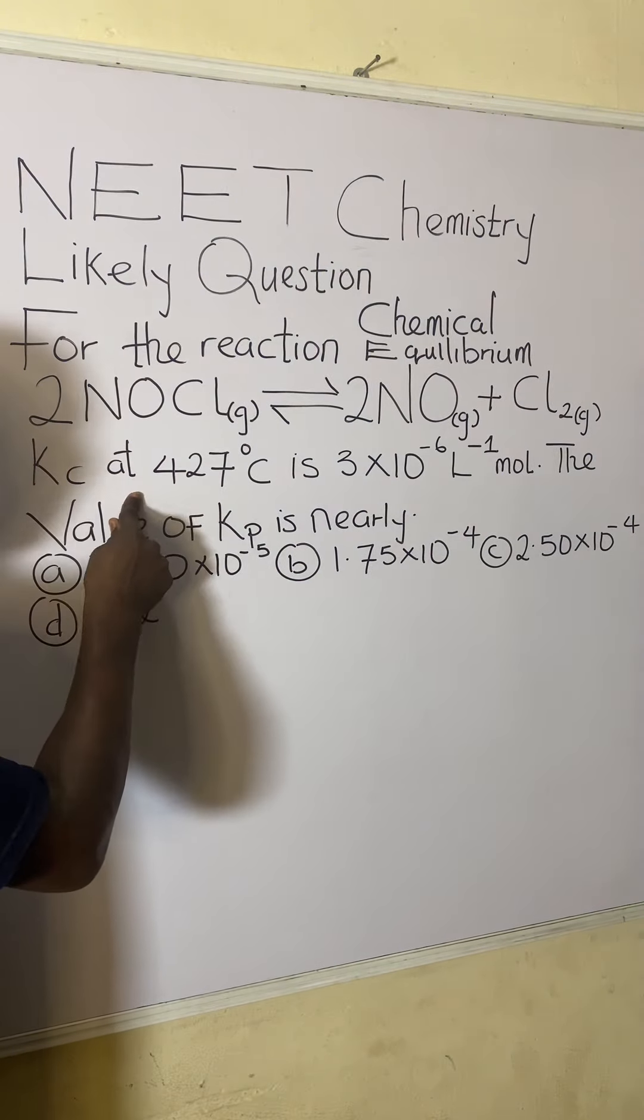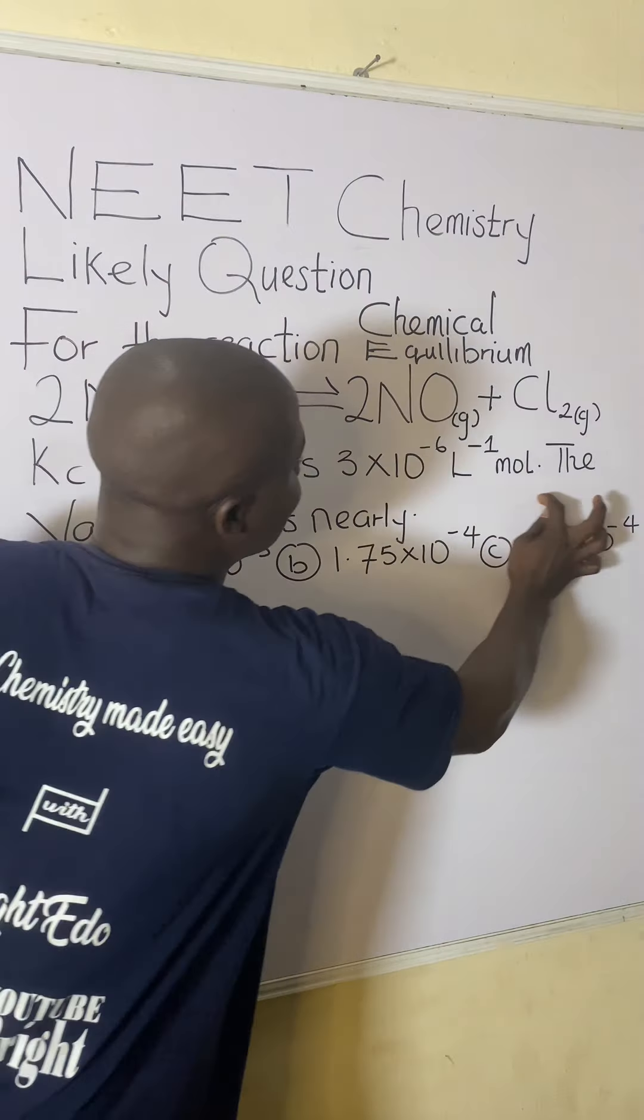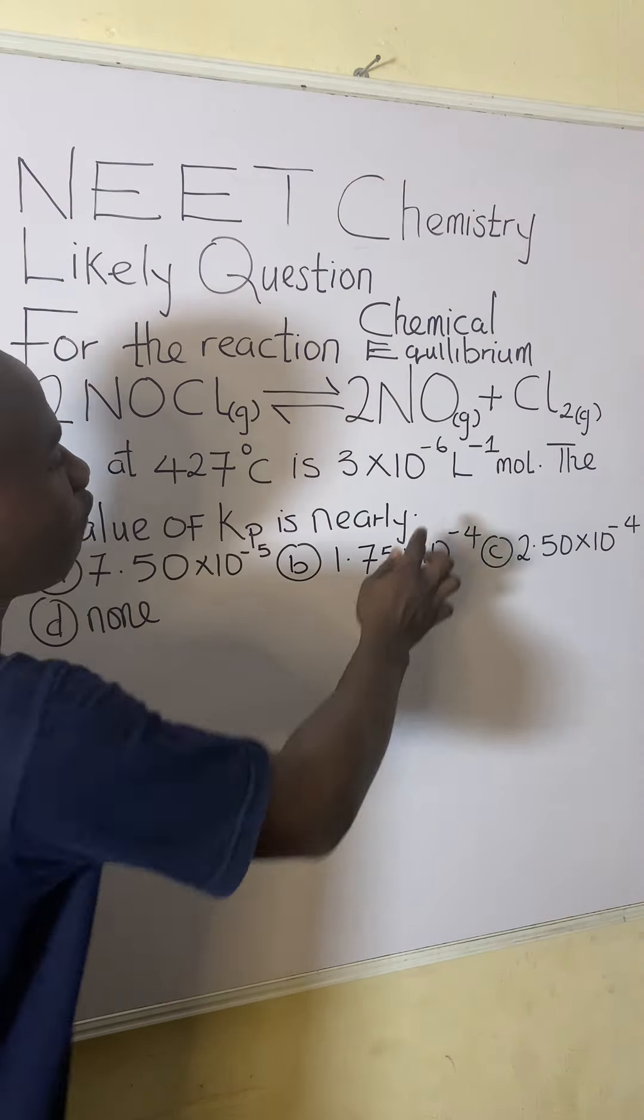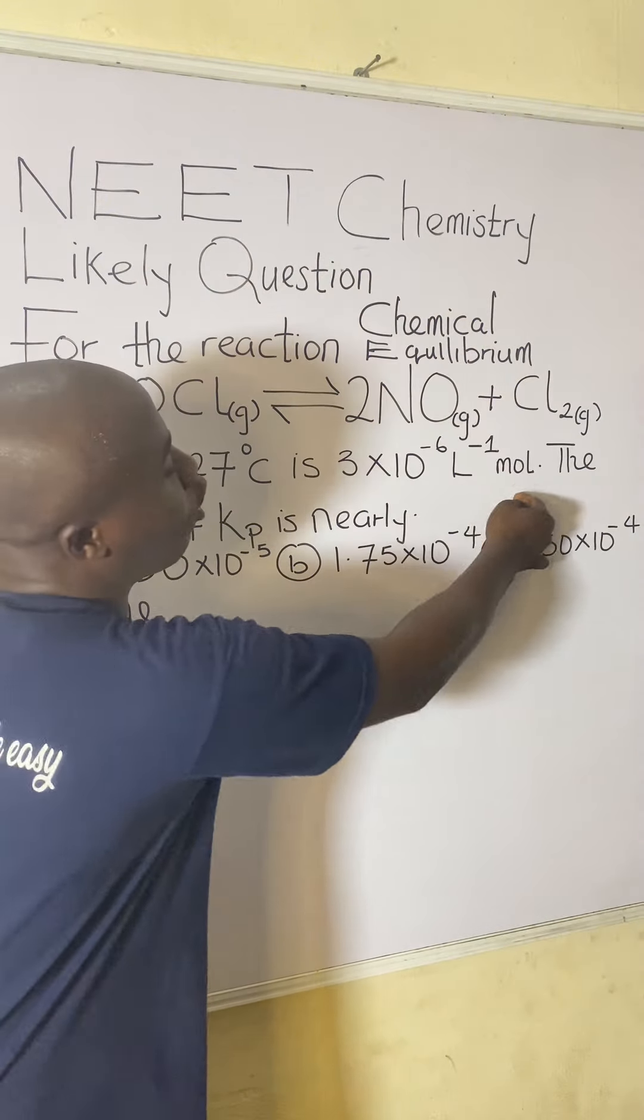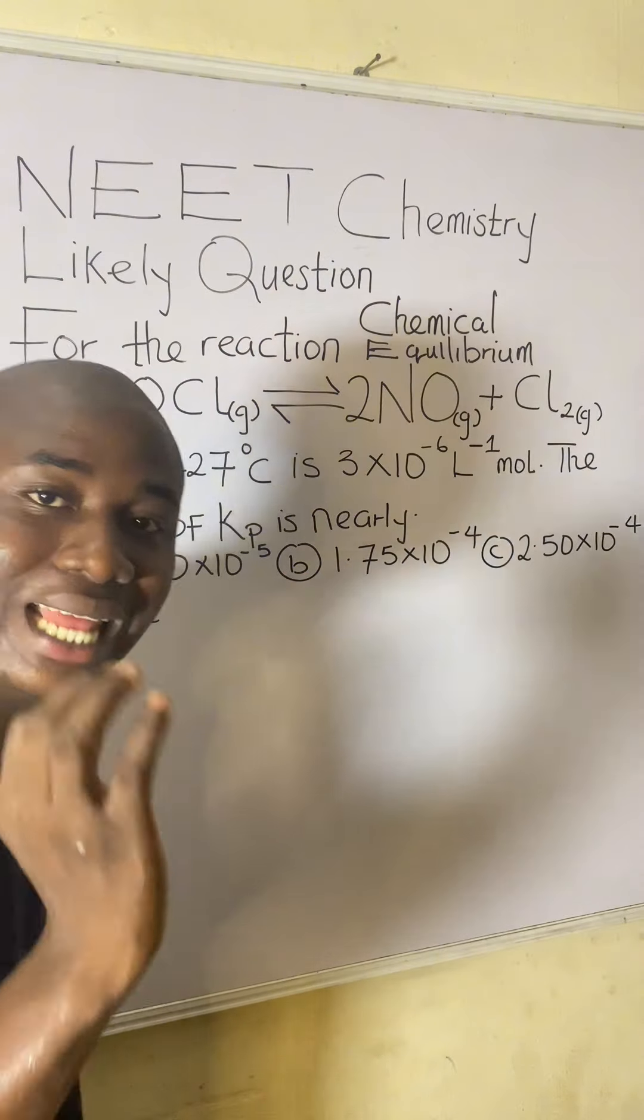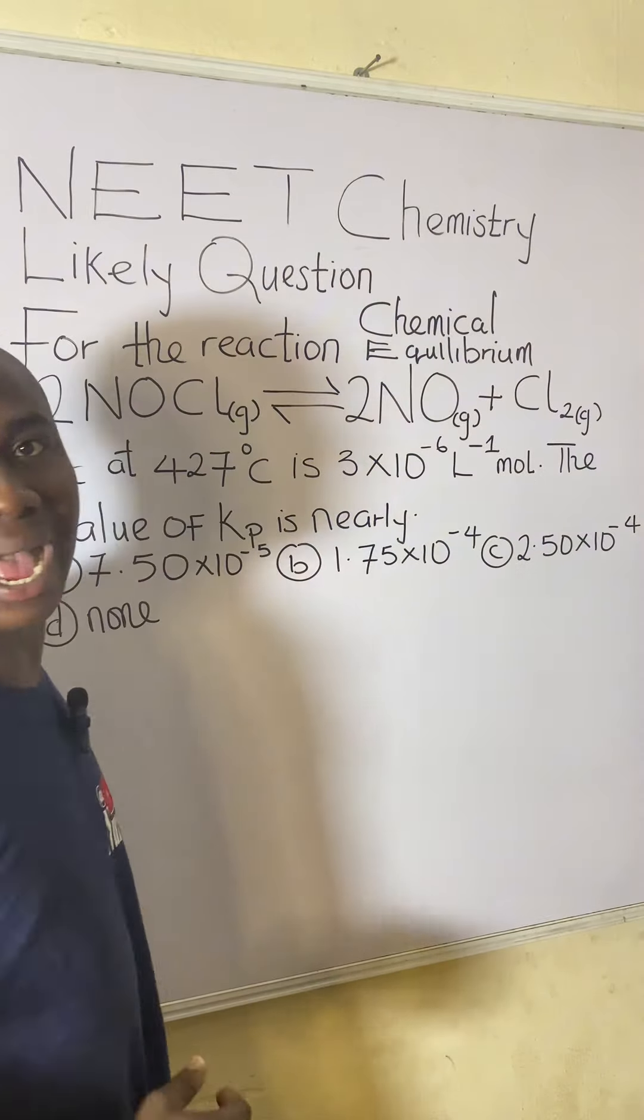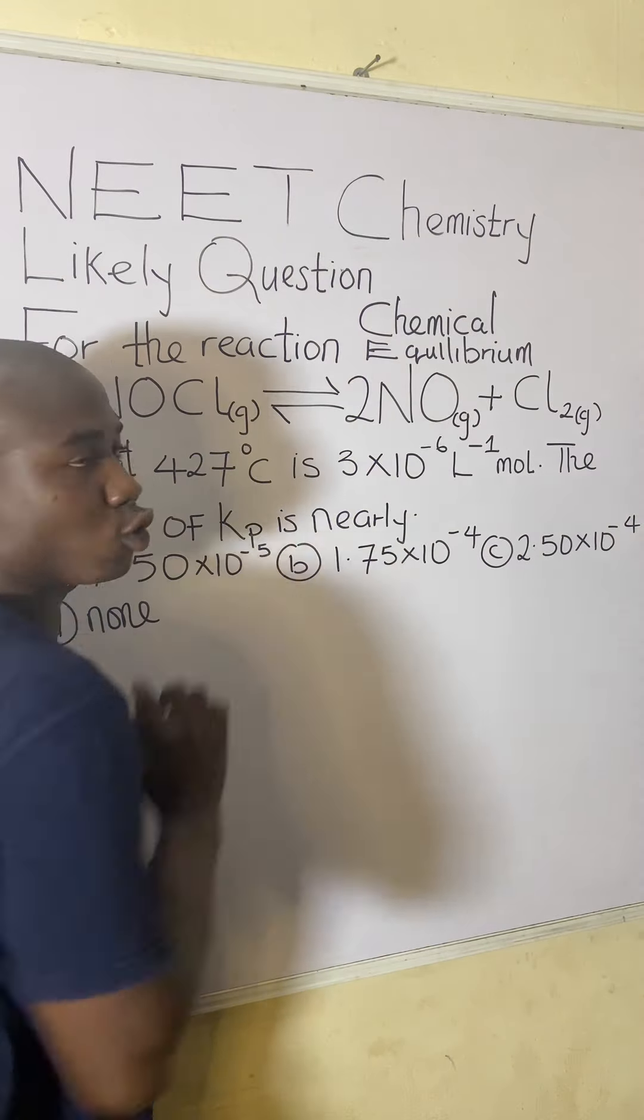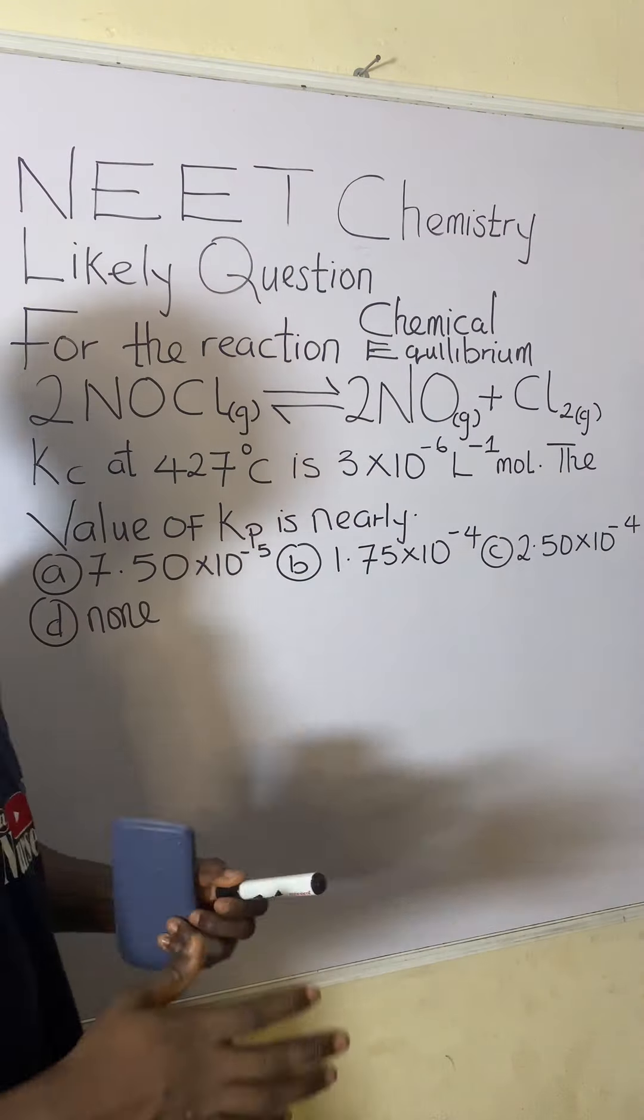So according to this question, it says, Kc at 427 degrees Celsius is this value, which is 3 times 10 raised to the power of minus 6 per liter moles. But basically it should be called moles per liter. That's the units of concentration moles per liter. The value of Kp is nearly, so how do we solve it?